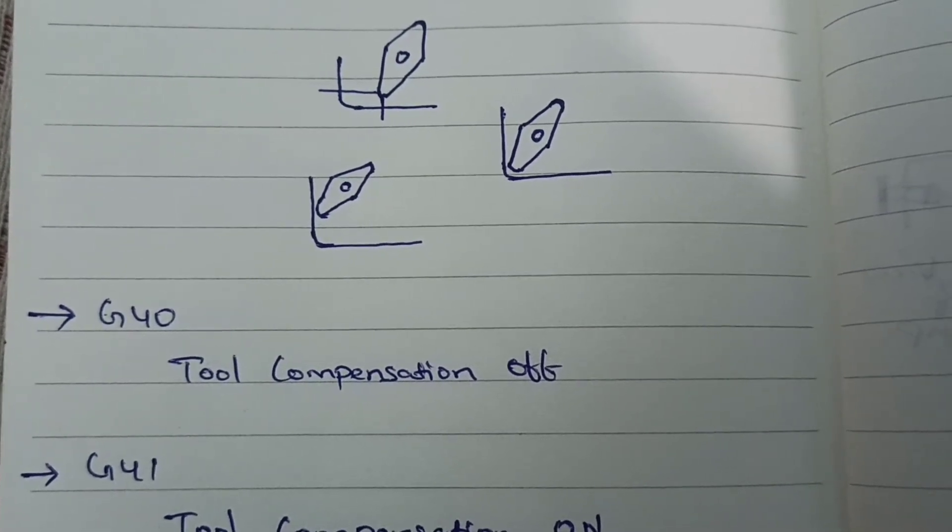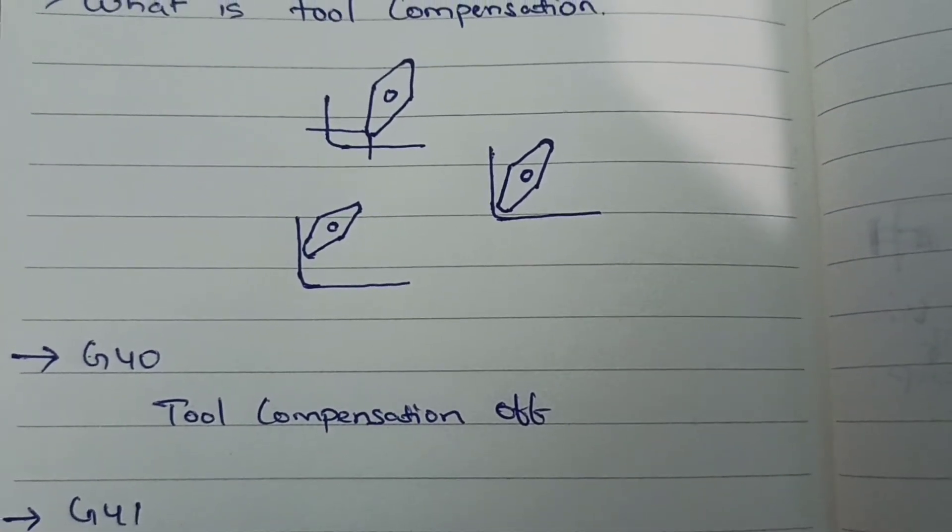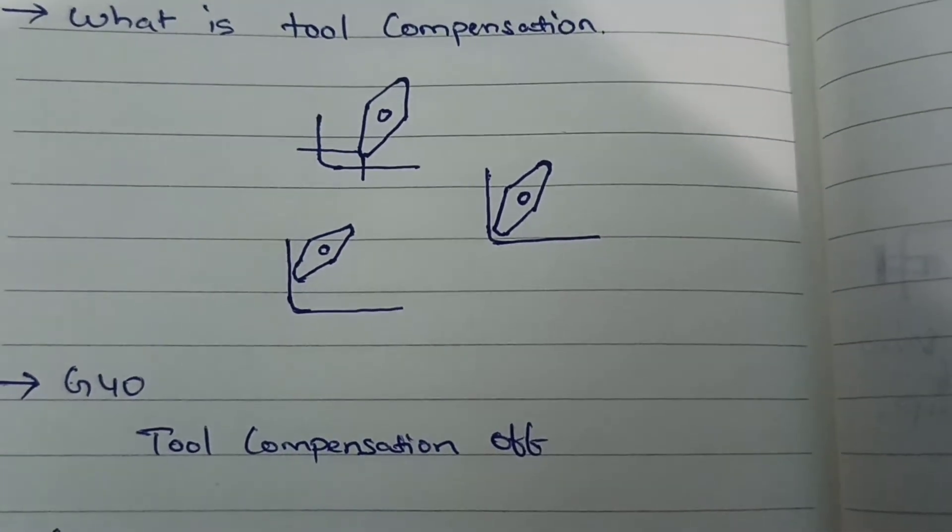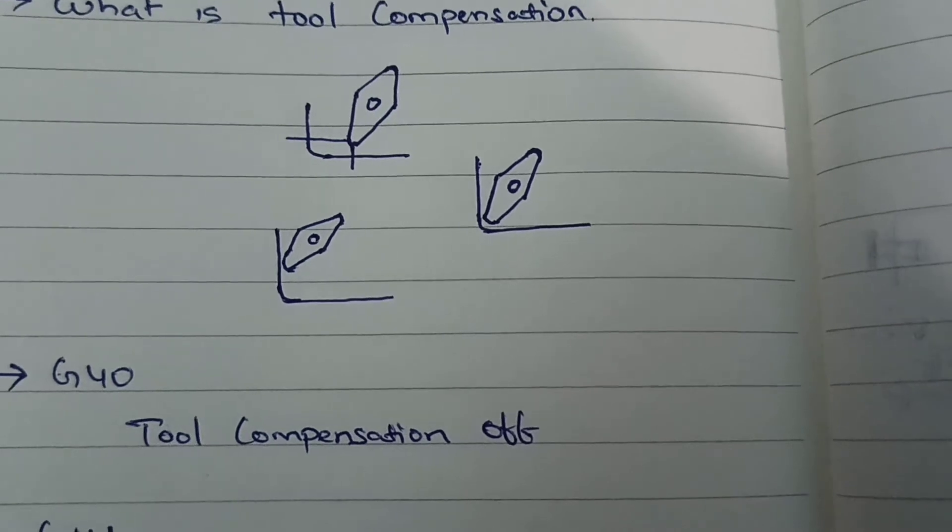So the tool will not form the exact radius that we give in programming. To compensate this error in cutting time, the tool compensation will be used.